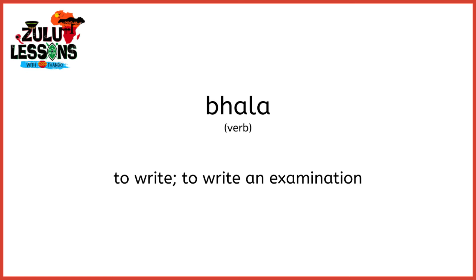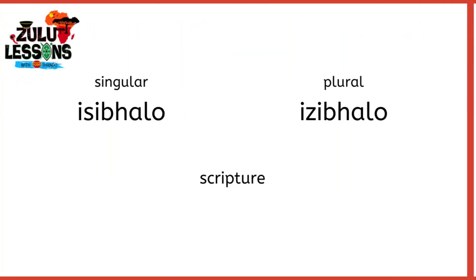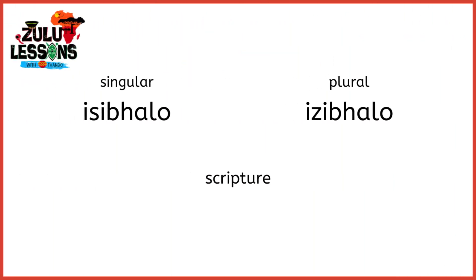Now what noun comes from the verb Bala? If we put ISI before that noun and we drop the vowel A at the end of the verb, then we will have ISIBALO. ISIBALO is a scripture. The plural is IZIBALO — so scriptures.